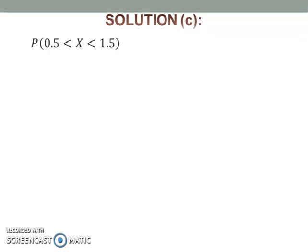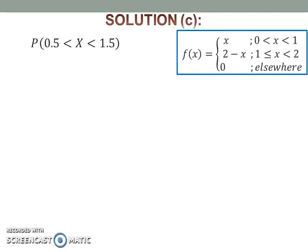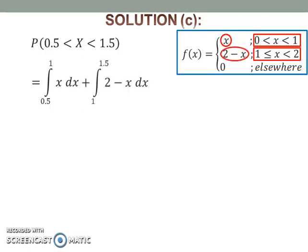To find the probability of x between 0.5 and 1.5, first look at the function. From the function, it can be seen that 0.5 lies in the first interval and 1.5 lies in the second interval. Thus, integrate x with respect to x from 0.5 to 1, and add to the integration of (2 minus x) with respect to x from 1 to 1.5.